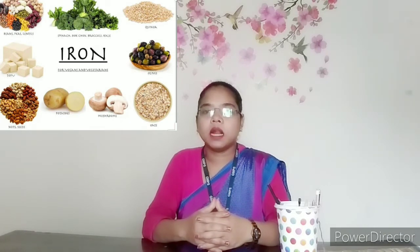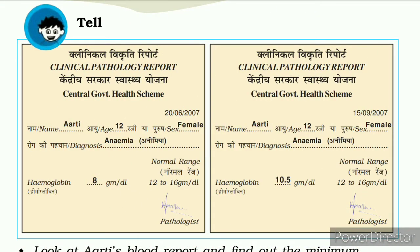Now we will see the blood report and find out how we can detect the deficiency of iron — how we can know if someone has anemia. For the blood report, you have to open page number 70. You can see there is a clinical pathology report. The name, age, and sex are written. Now for the diagnosis, we can see that hemoglobin is 8 gm/dL, but the normal range is 12 to 16 gm/dL.